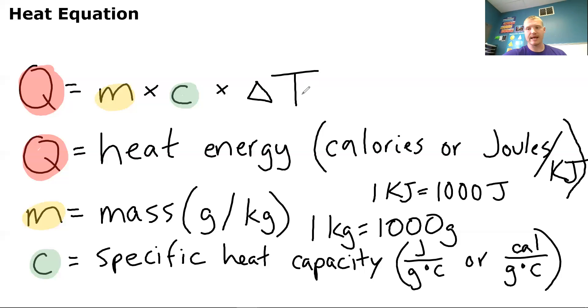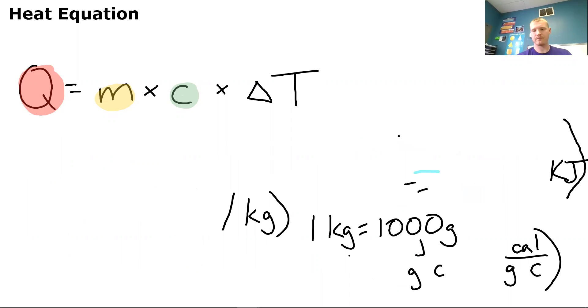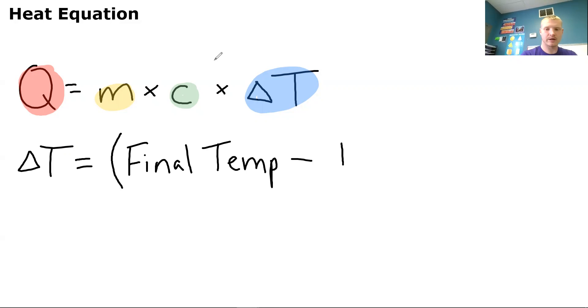And then we have delta T. And that is our change in temperature. So delta T, that is going to be, I'll make it blue. So delta T. So that right there, delta T stands for your, so when you put it into an equation, it'll be in parentheses, your final temperature minus your initial temperature.